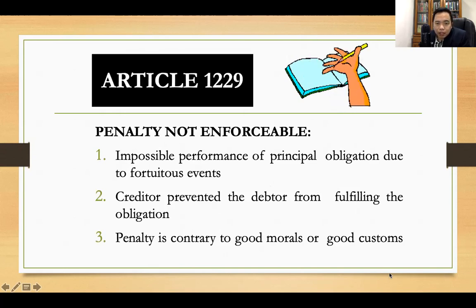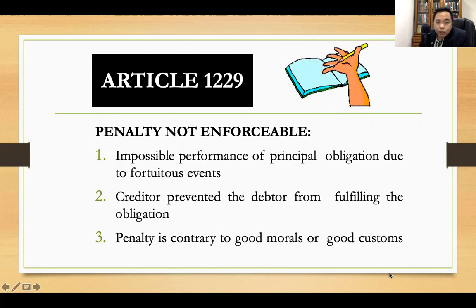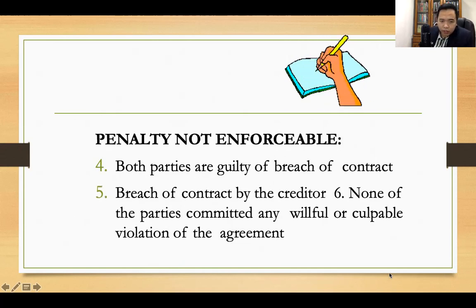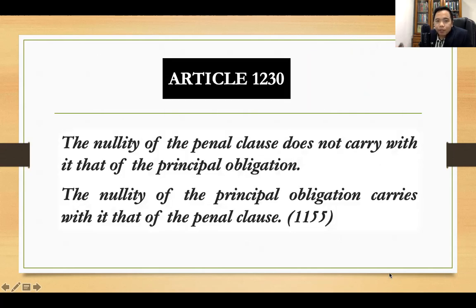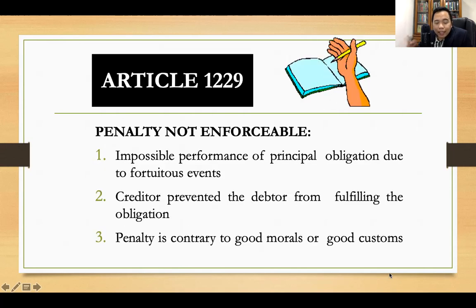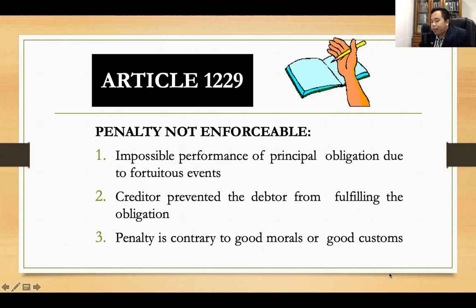Penalties which are not enforceable include: number one, impossible performance of the principal obligation due to a fortuitous event, because in this case the obligation is extinguished; number two, the creditor prevented the debtor from fulfilling the obligation; number three, if the penalty is contrary to good morals or good customs; number four, if both parties are mutually guilty of breach of contract; number five, breach of contract by the creditor; and number six, none of the parties committed any willful or culpable violation of the agreement. These are the instances when, even if there is a penal clause and there is a breach, the obligor is not under any legal obligation to pay the penalty.